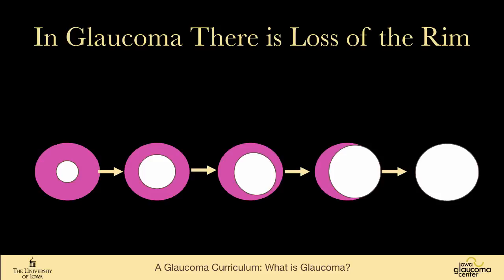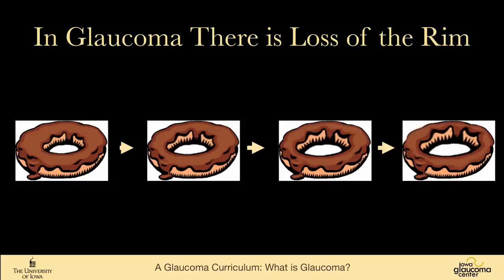With time, there is loss of ganglion cells and the neuroretinal rim of the optic nerve. As this cartoon shows, the rim gets thinner and thinner and is ultimately gone. The analogy I use with patients is it's like a donut where the hole is getting larger and larger. We're not concerned about the hole — we're concerned that the edible part is getting thinner. It's the rim of the nerve that we're interested in, not the cup.